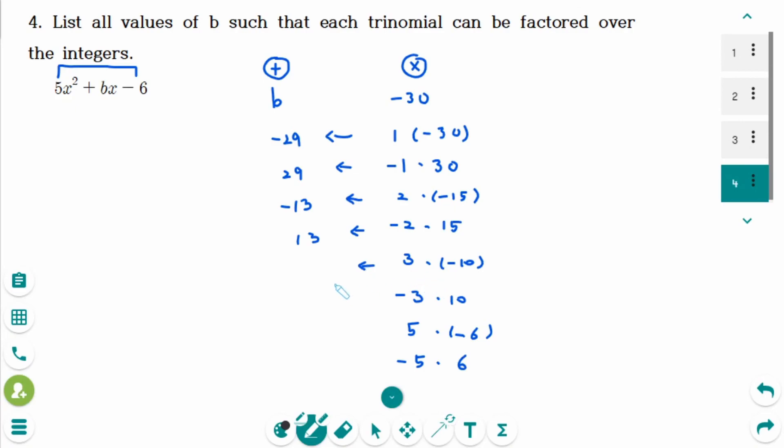And then minus 7. These two make 7. Then minus 1. And 1. By this, b can be plus minus 29, plus minus 13, plus minus 7, and plus minus 1. These are the answers.